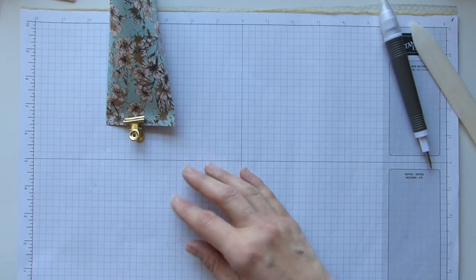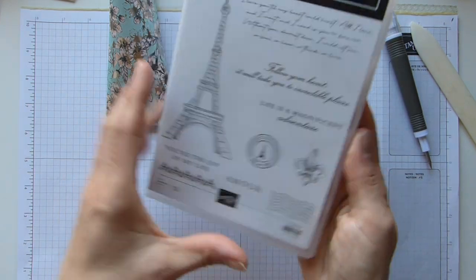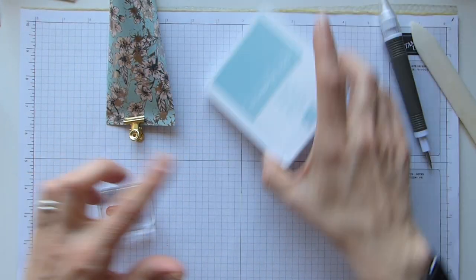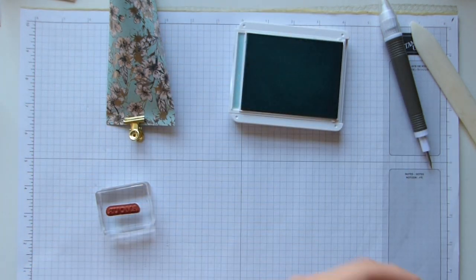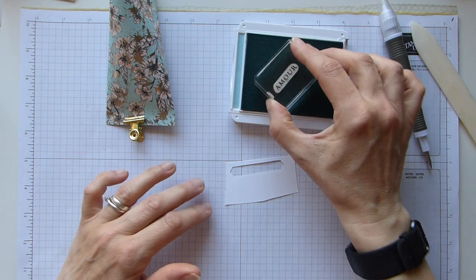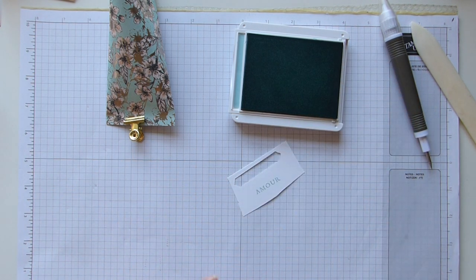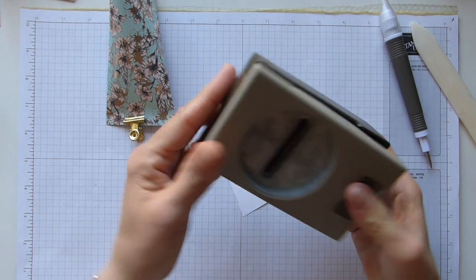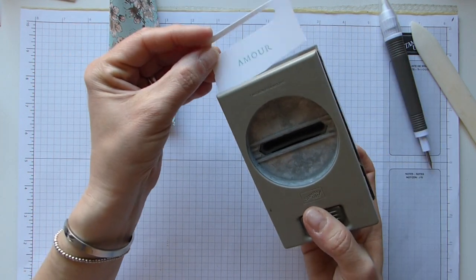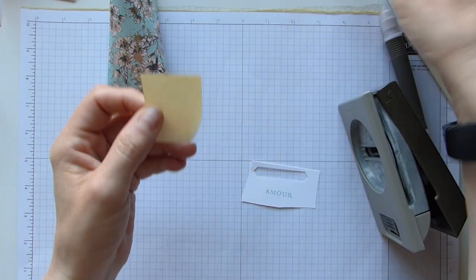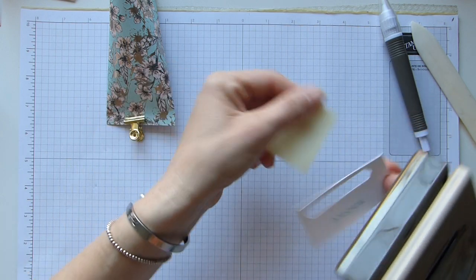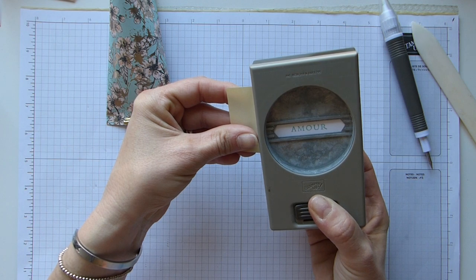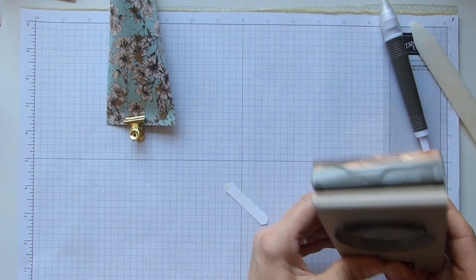For my decoration, I'm going with Parisian Beauty. I have my coordinating pool party ink and some whisper white. I'll simply stamp that and then use my classic label punch. I have just popped this in the center.